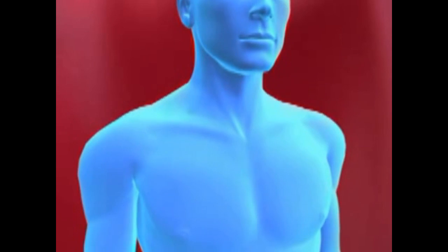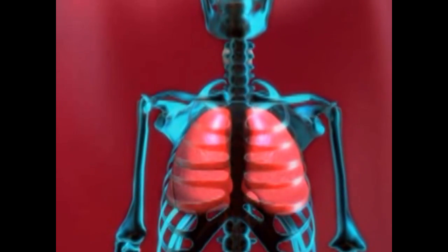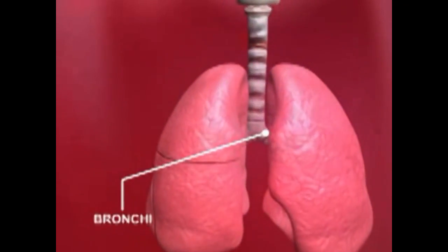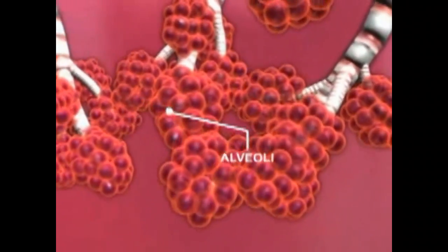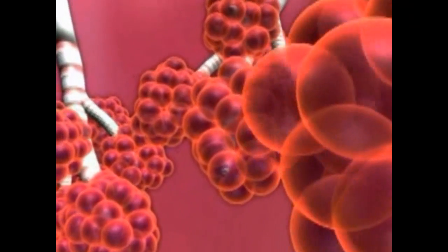Dalam sistem pernafasan biasa, udara yang disedut akan melalui salur pernafasan. Udara akan melalui trachea, kemudian salur pernafasan akan berpecah kepada bronkai, seterusnya kepada bronchiol, dan akhir sekali udara akan sampai kepada alveoli. Alveoli adalah tempat di mana pertukaran gas berlaku.